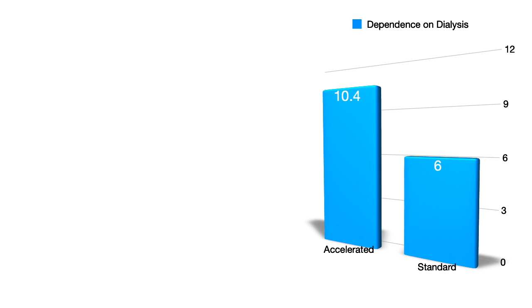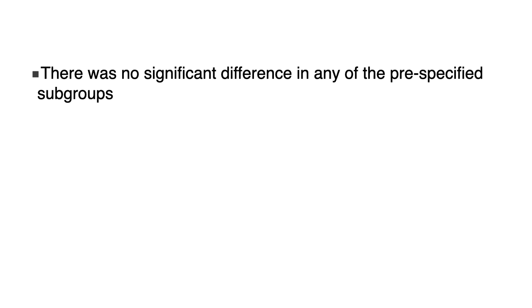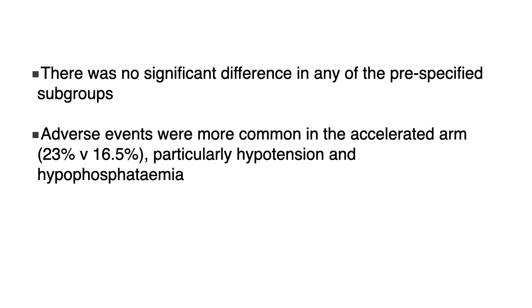Looking at secondary outcomes that were statistically significant: dependence on dialysis was significantly higher in the accelerated group at around 10% versus only 6% in the standard group. Days in ICU were significantly fewer in the accelerated group — 9 days versus 10 days — though the difference was just one day. There was no significant difference in any pre-specified subgroups. Adverse events were more common in the accelerated arm, particularly hypotension and hypophosphatemia, though serious adverse effects were not significantly different.